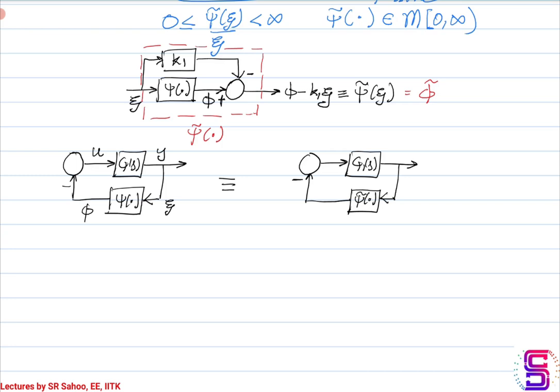I have to find this equivalent system because I have already shown that psi-tilde is in the zero-to-infinity sector and is a passive system. If I can find this equivalent representation, I would need the G1(s) system to be strictly positive real, which gives me a condition on G(s). I will label the original system as System 1 and the equivalent as System 2.